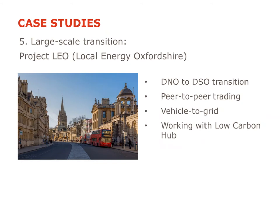Moving to a much larger scale, we have Project LEO — Local Energy Oxfordshire. This is around 90 demonstration projects across the county, involving both of Oxford's universities, the city and county councils, various energy and technology companies, and community involvement through the organization Low Carbon Hub. This aims to demonstrate the DNO to DSO transition — moving from a centralized electricity system with one-way flow to a more distributed system of smart management and two-way flows, including peer-to-peer trading and vehicle-to-grid technologies, which use electric vehicle batteries to store electricity during high renewable output and release it when required.